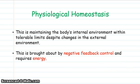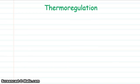This brings us on to physiological homeostasis — the way an organism's body can maintain a steady internal environment. Often this is done by negative feedback control, and often it requires lots of energy. A good example is thermoregulation in animals, including ourselves.